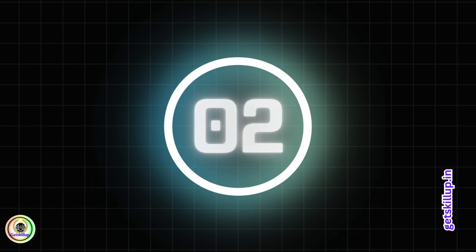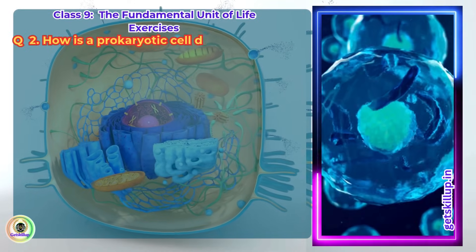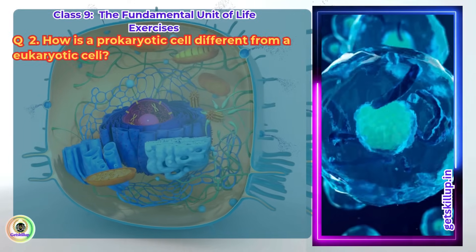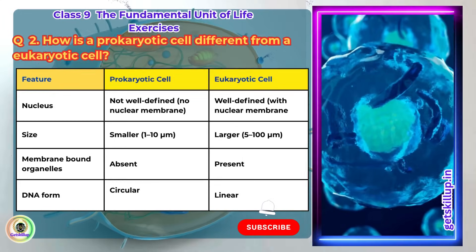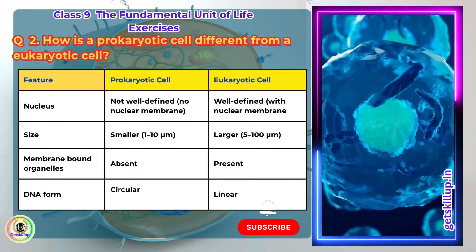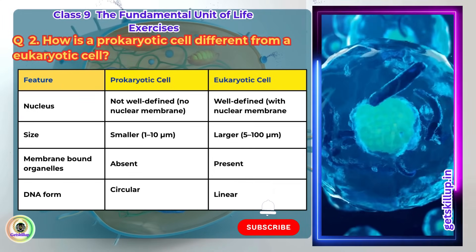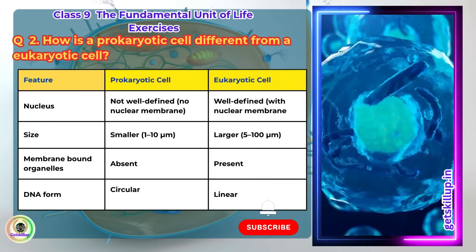Q2. How is a prokaryotic cell different from a eukaryotic cell? Features of prokaryotic cell: Nucleus is not well defined.